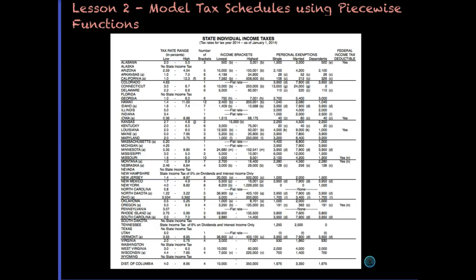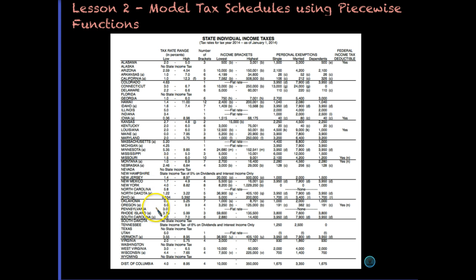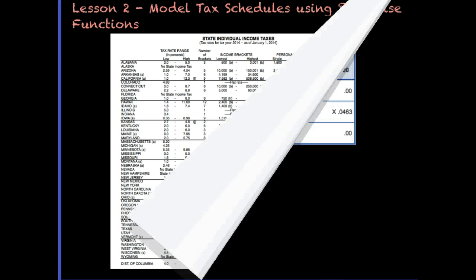Let's look at states in general. This table is very handy, especially if you plan to move. Some states like Alaska, Florida, and Nevada have no state income tax. New Hampshire only taxes dividends and interest. Washington, South Dakota, and Wyoming also have no state taxes. Hawaii and California are among the highest, while North Dakota is relatively low at about 3.2%.